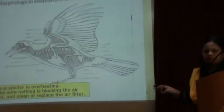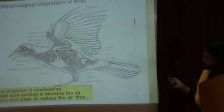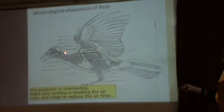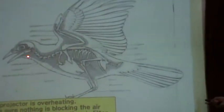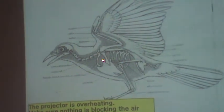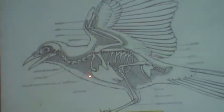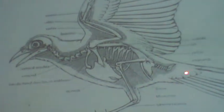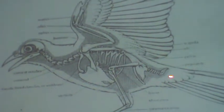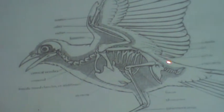The bird's body is divided into head, neck, trunk, and tail. The trunk region is further divided into the thoracic region and the abdominal region, and a small tail is present.